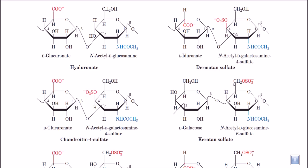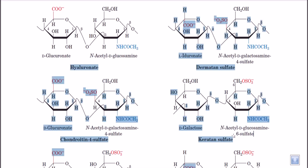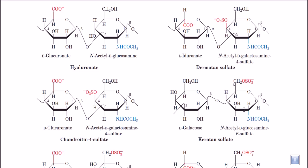Now let us look at keratan sulfate. Keratan sulfate is a really important component for making keratin structures. Here we have galactose — unlike the previous cases which used glucuronic acid — and this galactose is attached to N-acetyl glucosamine-6-sulfate, meaning a sulfate moiety is attached to the sixth carbon position, replacing the hydroxyl group.